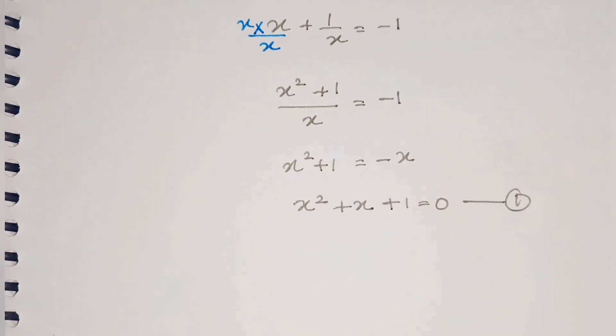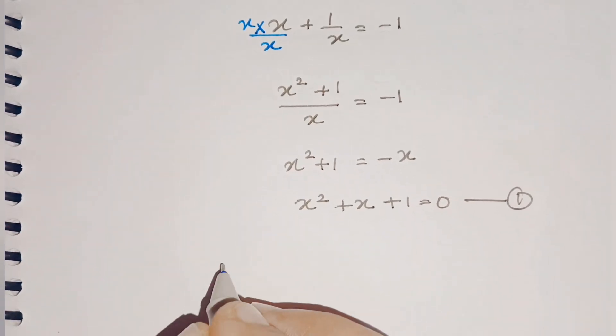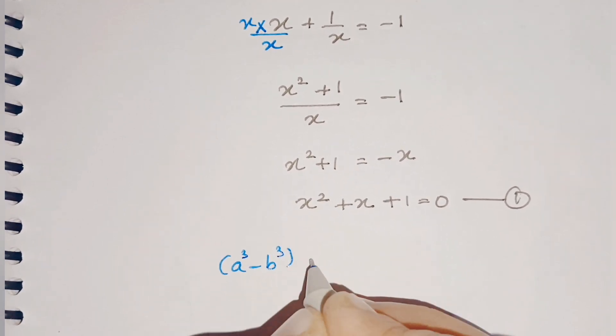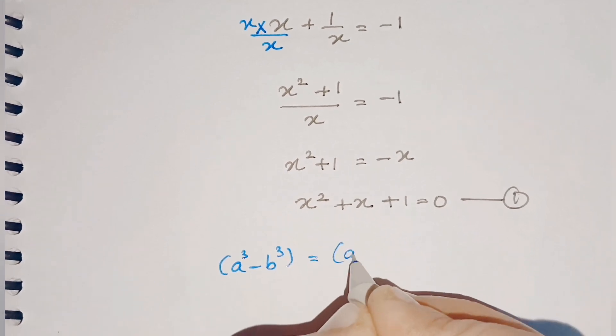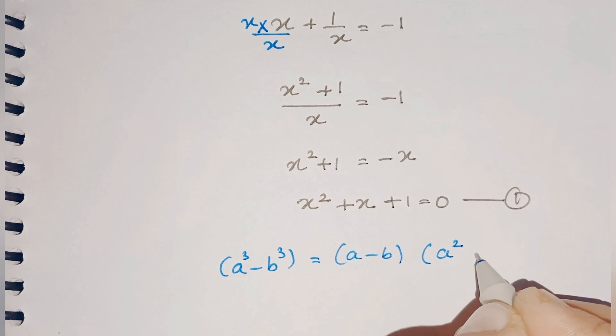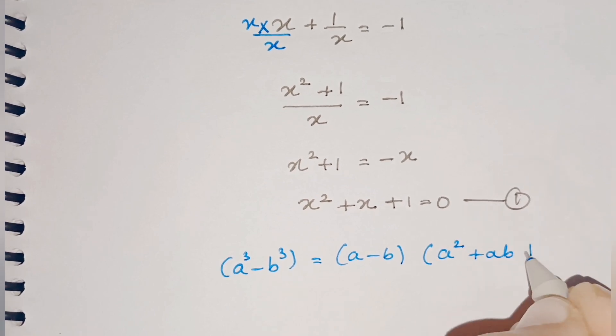By using this equation, we can calculate the value of x³. Let's see how. We know the formula for a³ - b³, that is equal to (a - b)(a² + ab + b²).